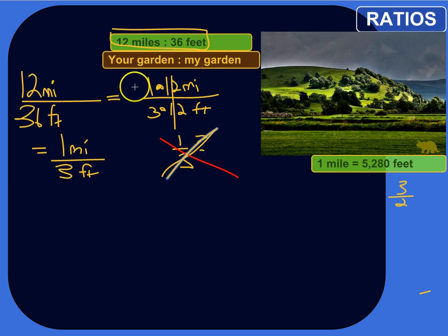So what we need to do is we need to use the same units, and then we can get a truly simplified ratio. So let's convert either the feet to miles or miles to feet. I think it's going to be easier to convert the miles to feet.